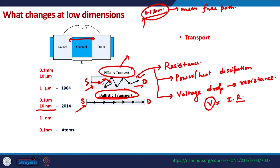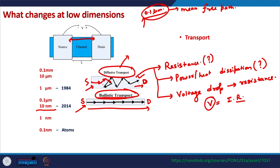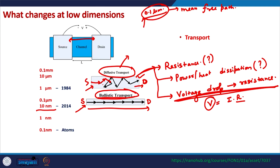With this, new questions arise. What would be the resistance in this case? Resistance in diffusive transport was because of collisions in the channel, but what could be the resistance in ballistic transport? A second question is: what is the power or heat dissipation in ballistic transport? If the electron is not colliding with anything in the channel, where is the power getting dissipated? And what is the voltage drop across the device?